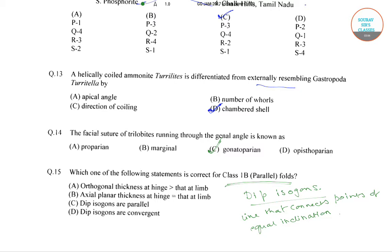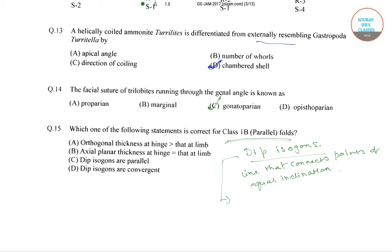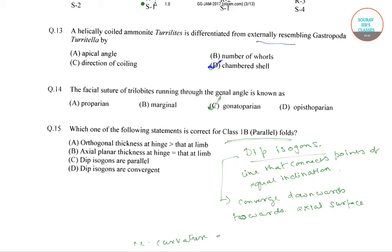The dip isogons converge downwards towards the axial surface, signifying that the curvature of the outer arc is less than that of the inner arc.